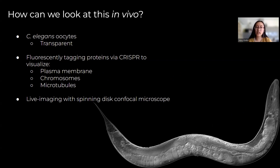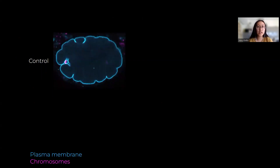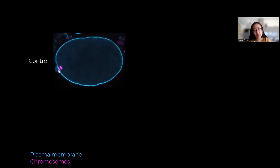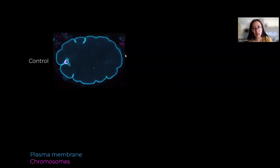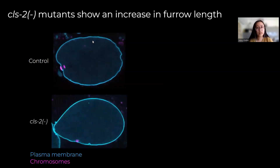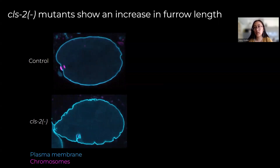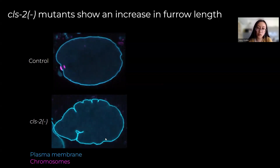Once the worms are ready, we can then live image with the spinning disk confocal microscope. Here's a movie of a control oocyte expressing fluorescent markers for the plasma membrane and chromosomes. As you can see, the chromosomes migrate over to the cortex, and that ring ingresses past one set of chromosomes, then it extrudes a polar body. At the same time, we see all of these other furrows that we're interested in around the cortex. There's a mutant that lacks the protein CLS2 that shows an increase in furrow length — not the main furrow, but rather these global furrows.